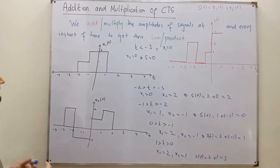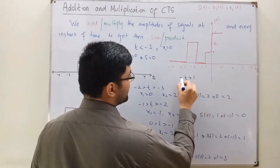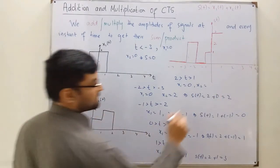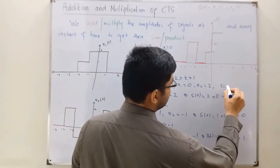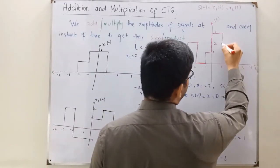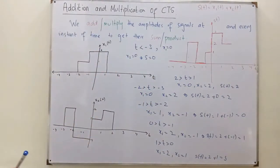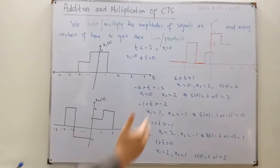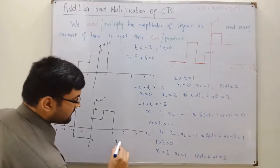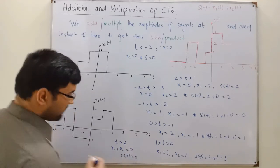From 1 to 2: when t is greater than 1 and less than 2, x1 is 0 and x2 is 2. So their sum would be 2 in this case. When t is greater than 2, x1 and x2 are both equal to 0, so the sum equals 0 after that.